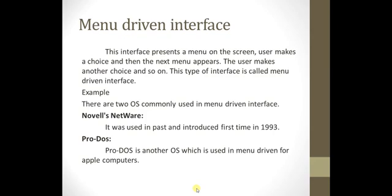The second type of interface is the menu driven interface. As the name suggests, here we have menus. If we want to enter or do something, we click, and a drop-down menu appears. That menu has multiple options. We select one option, and another menu appears. This process continues until our task is complete.